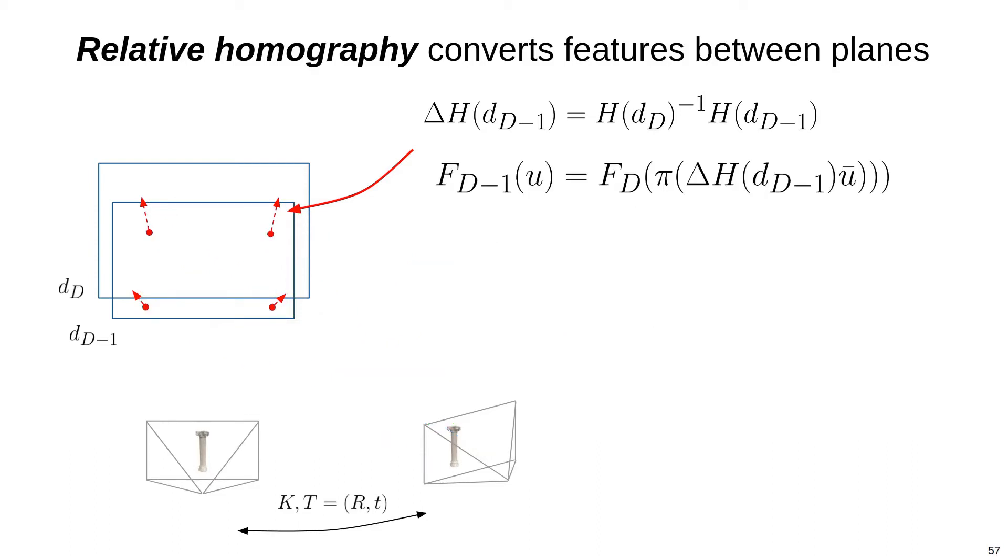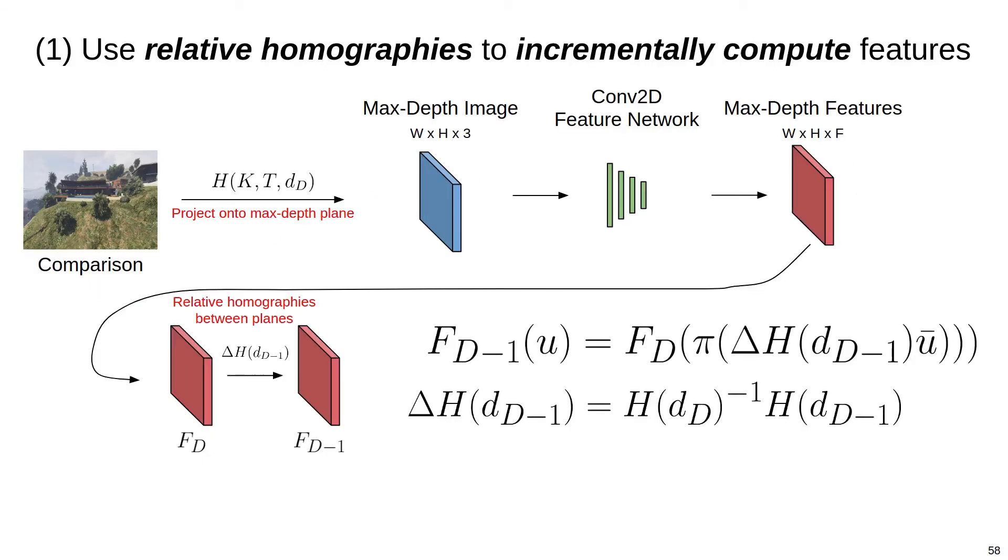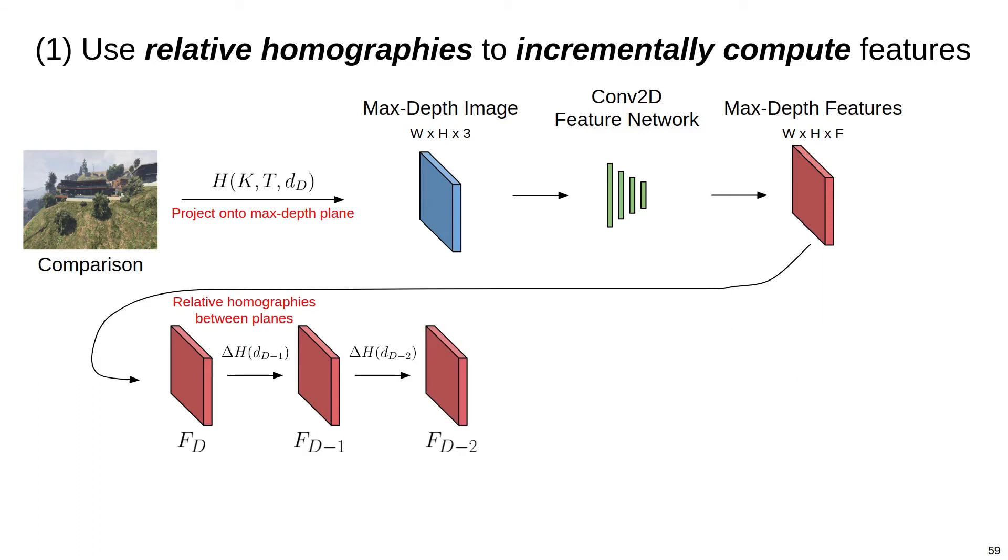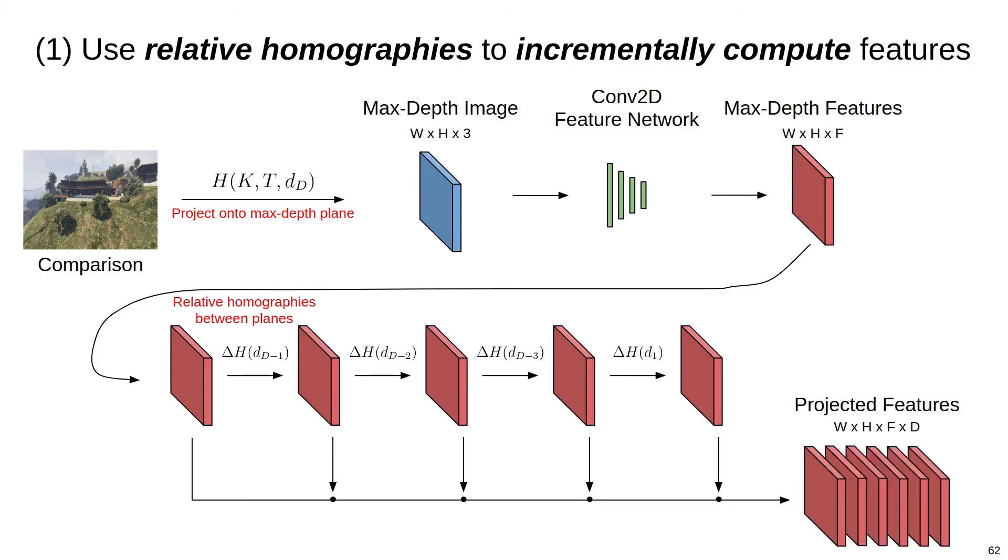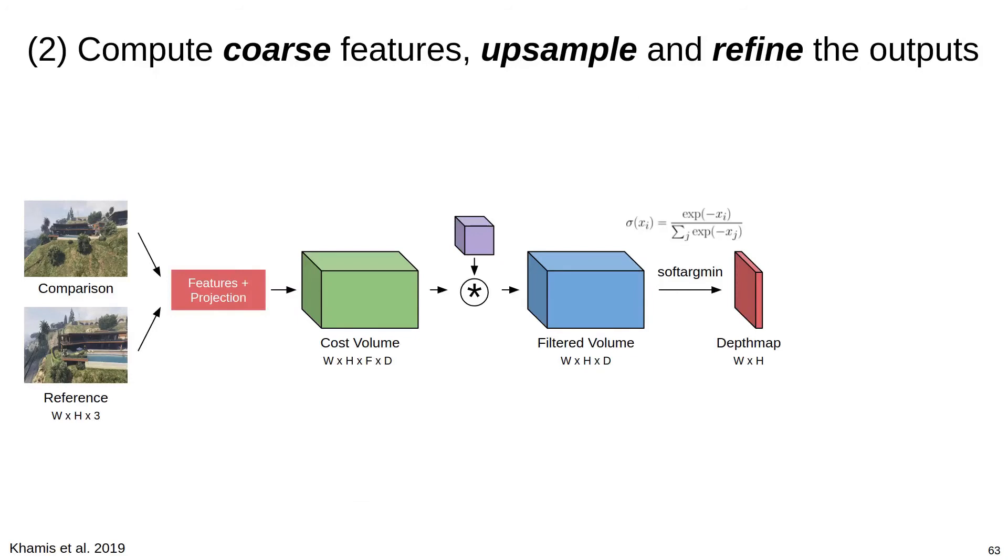Now that we have this relative homography, we can build f_{d-1} by applying delta h to the pixel domain of f_d and bilinearly sampling. So now that we have delta h, we can compute f_{d-1} from f_d, and f_{d-2} from f_{d-1}, and so on, until we've computed feature maps for all the planes and depth samples. These projected features correctly compensate for the viewpoint change between the cameras, but we only had to apply the bulk of the convolutional layers that extract features from the image data once.